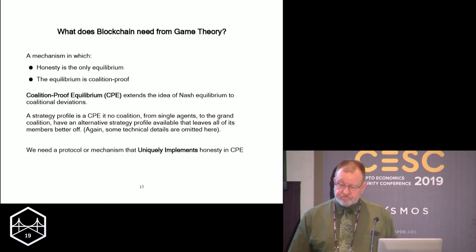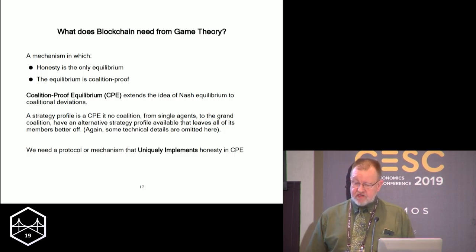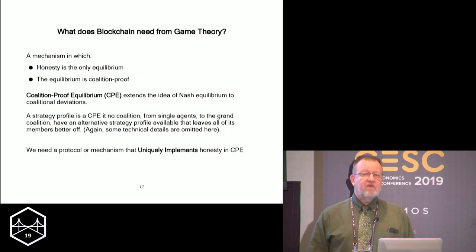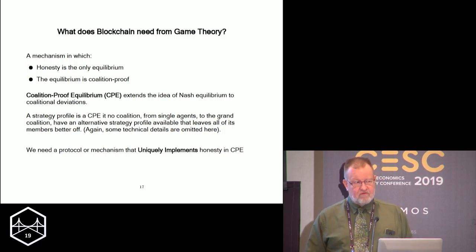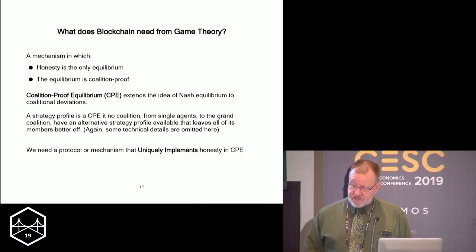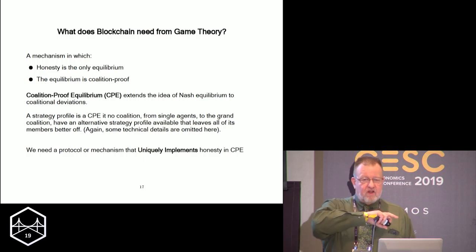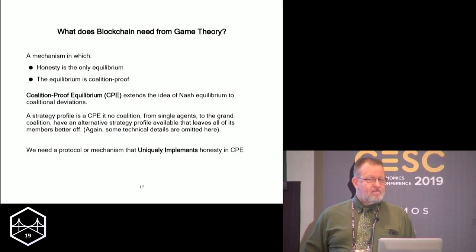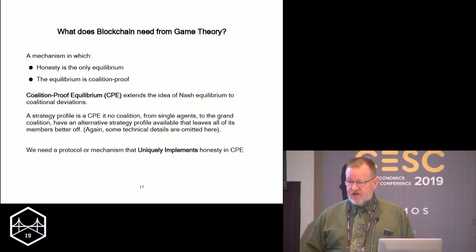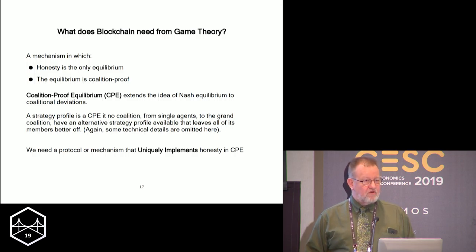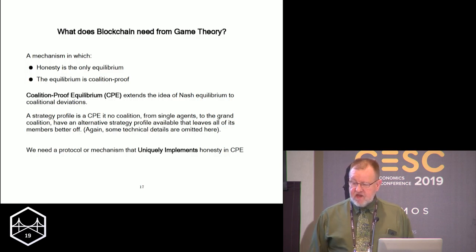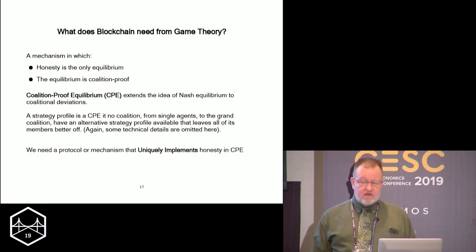So what do we need from game theory? We need a mechanism with two properties. One: honest following of protocol is the only equilibrium — it's unique. Two: that equilibrium must be coalition-proof. Coalition-proof equilibrium extends the notion of proof against unilateral deviation to say there does not exist a coalition — one agent, five agents, or the grand coalition — that can follow any strategy besides honesty that improves their welfare. There is no coalitional deviation by any group that improves welfare above following protocol. Formally in economics, we'd say we want to implement honesty in coalition-proof equilibrium.